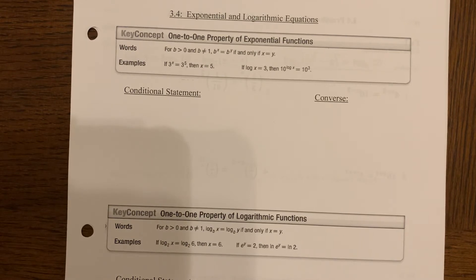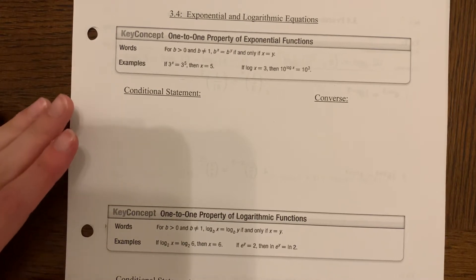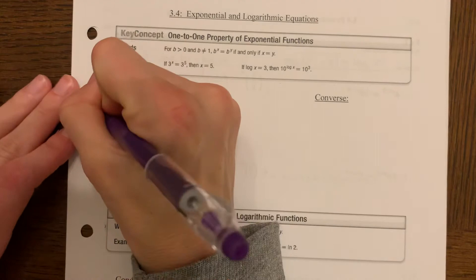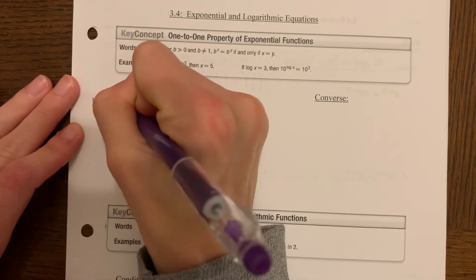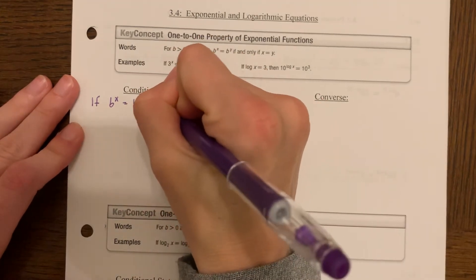We're going to begin with the one-to-one property of exponential functions. This states: for B greater than zero and B not equal to 1, B to the X power equals B to the Y power if and only if X equals Y. This is a true biconditional. The conditional statement is: if B to the X power equals B to the Y power, then X equals Y.